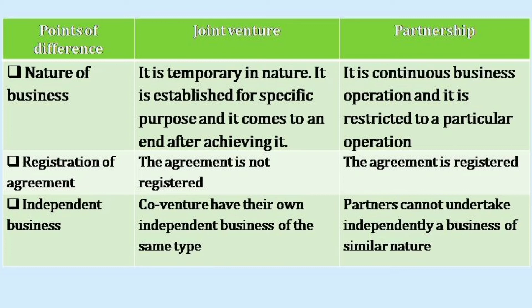The next difference is with regard to independent business. In a joint venture, co-venturers have their own independent business of the same type. Whereas in case of partnership, partners cannot undertake independently a business of a similar nature.